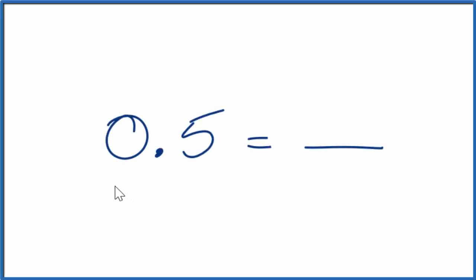Let's express the decimal 0.5 as a fraction, like numerator over denominator. How do we do that?